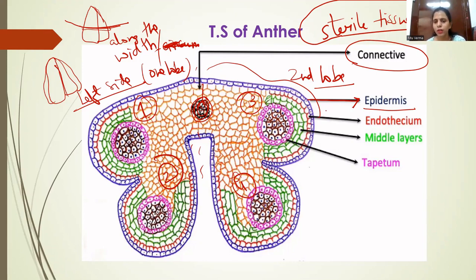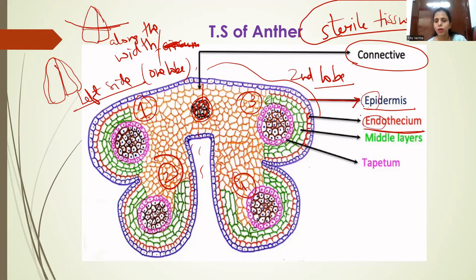The epidermis is the outermost layer of cells present around the entire anther. Just next to the epidermis there is another layer of cells called endothecium. 'Epi' means outside or covering, and 'endo' means inside.